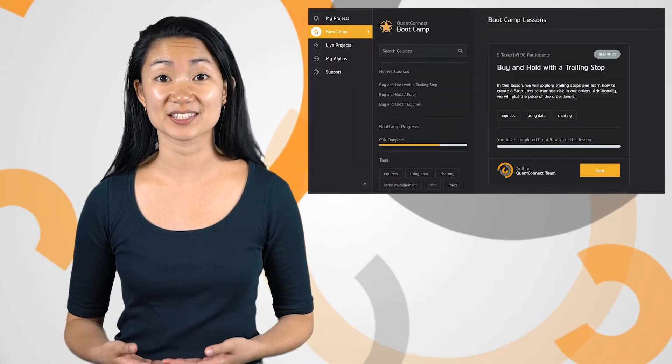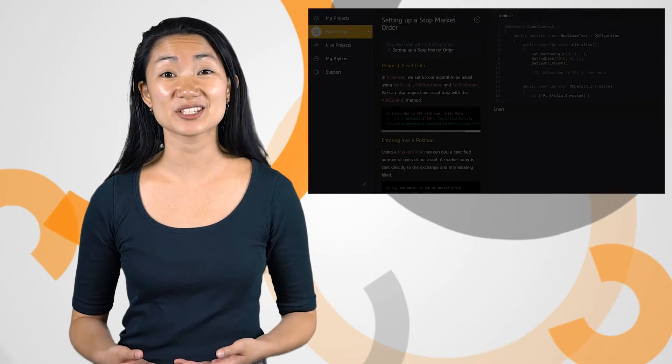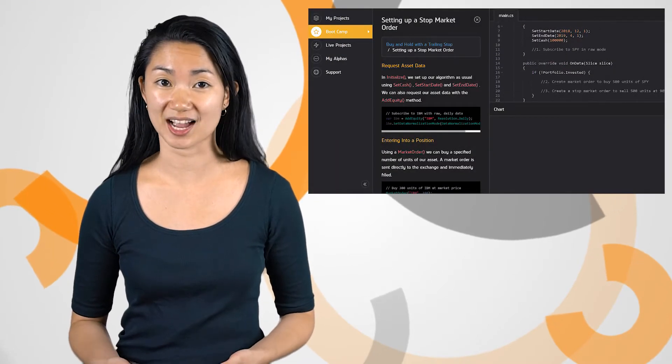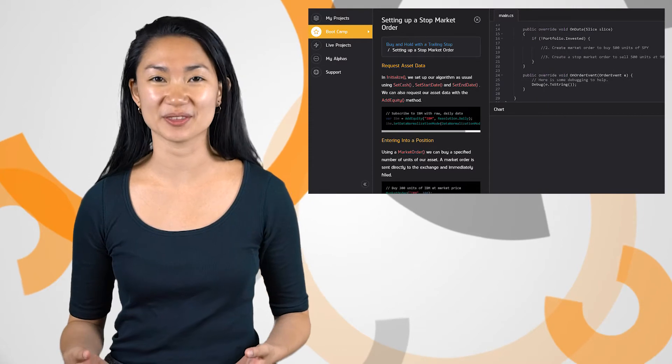Bootcamp was redesigned to have more robust validation logic and we released a new lesson buy and hold with trailing stop. Go check it out in the algorithm lab and let us know what you think.